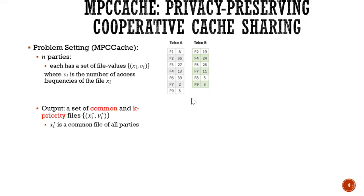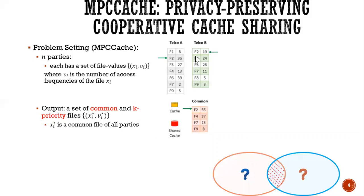And the goal is that parties want to output the set of common and K priority files. So it means that, first of all, XI star is the common file of all parties. So for example here, we have the common file F2 because both parties have F2, F4, F7, and F9.